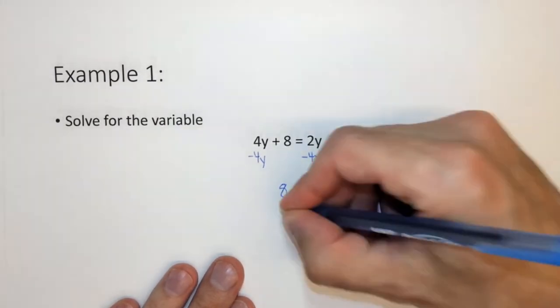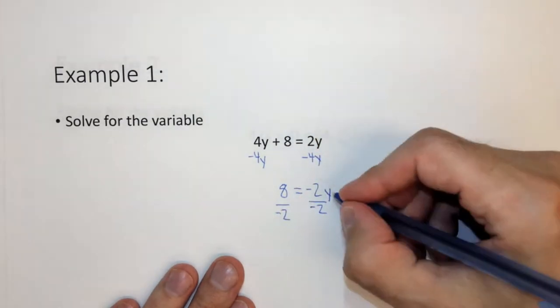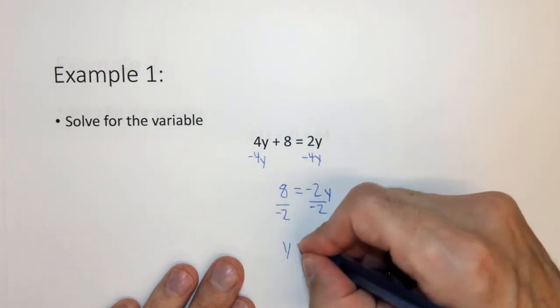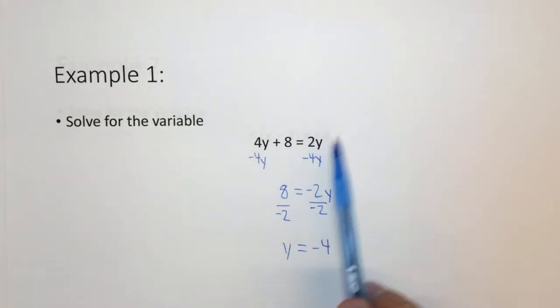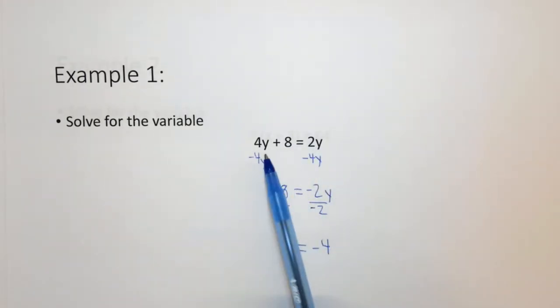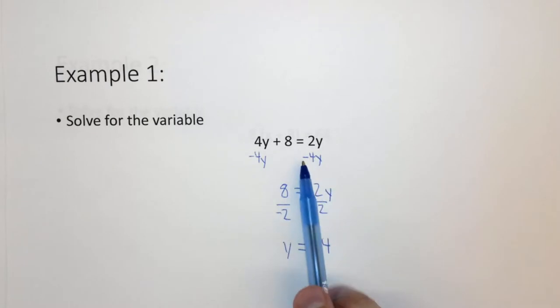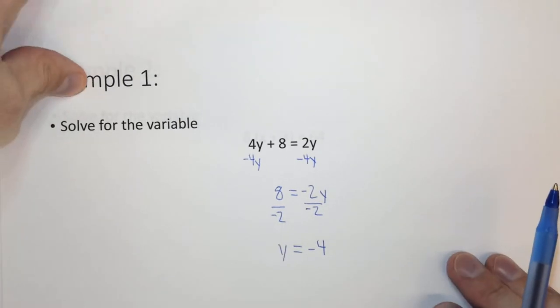Divide both sides by negative 2, and I'm going to move the y to the other side. Y equals negative 4. Again, everything we do to one side we do to the other. We subtract 4y from both sides, we divide by negative 2 on both sides. Because these things are equal, as long as I perform the same mathematical operation to both sides, I haven't violated the rules of math.